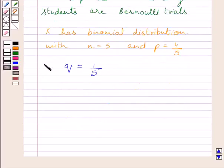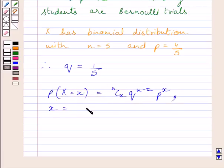We know the probability of X successes is equal to NCx multiplied by Q raised to the power N minus X, multiplied by P raised to the power X, where X equals 0, 1, 2, till N.